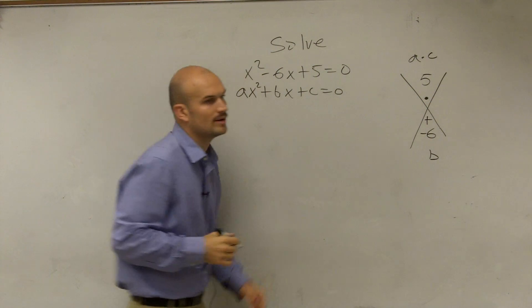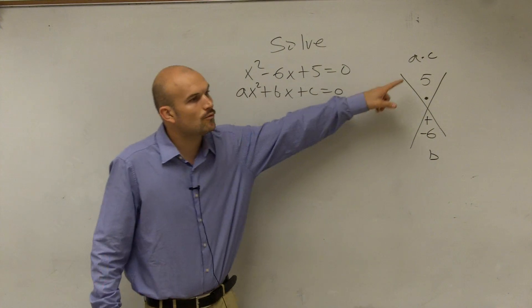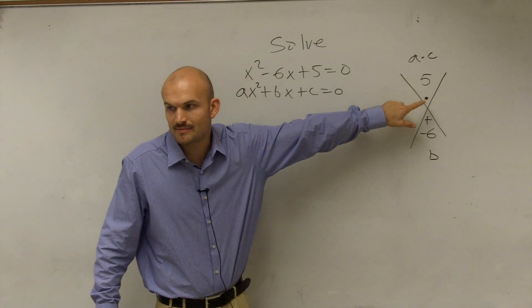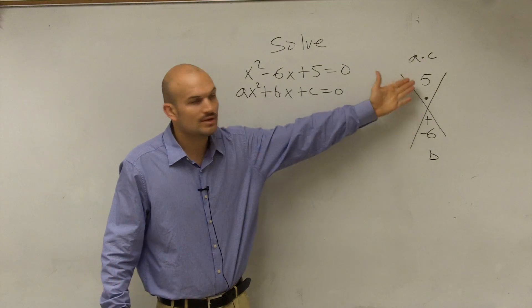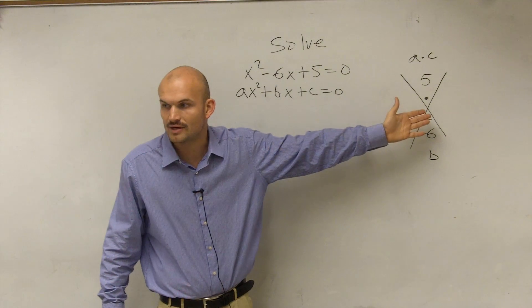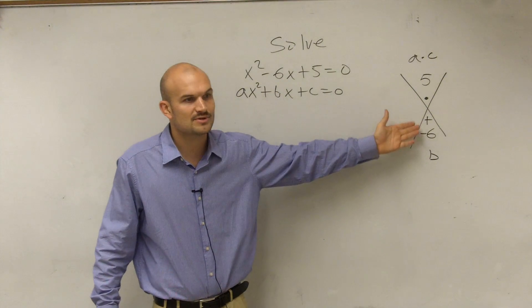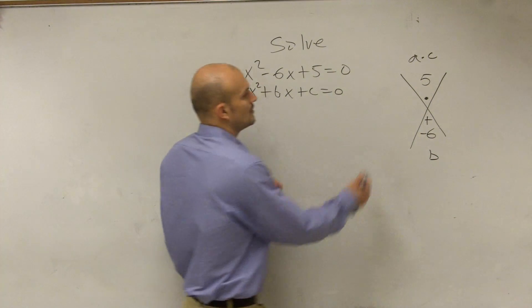Now, to figure out what my two factors are going to be, they're going to multiply to give me this. I say, what two numbers multiply to give me 5, but add to give me negative 6? So the only factors of 5 are 5 and 1, and negative 5 and negative 1. So what two numbers multiply to give you 5, and add to give you negative 6? Paige? Negative 5 and negative 1. There we go.